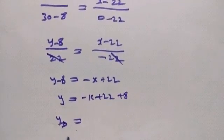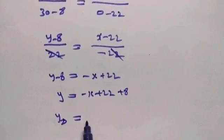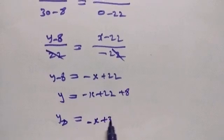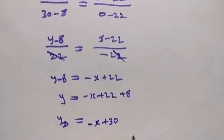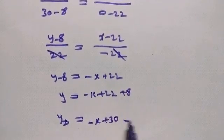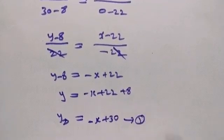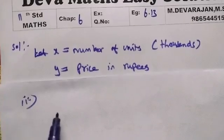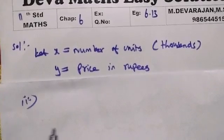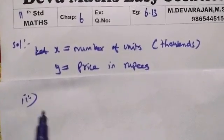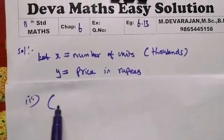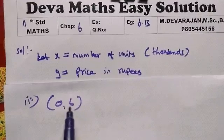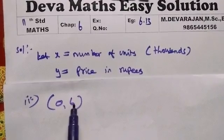So equation 1 — the demand equation — gives: yd equals minus x plus 30. Now for the supply equation: supply equation — disc rate Rs.6, supply is 0.